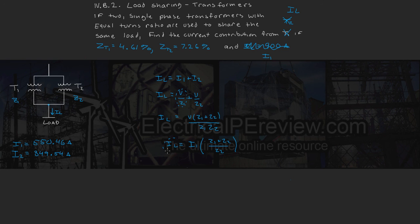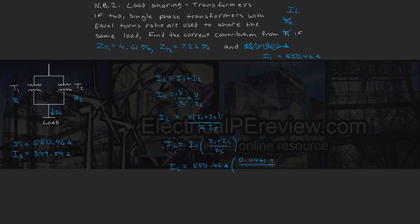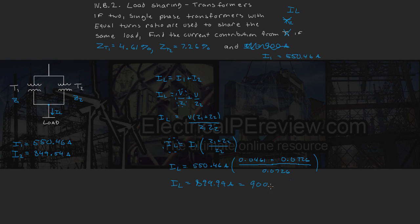Since we're searching for the load current, we plug in our terms. We know I1 equals 550.46 amps. Multiplying that by the sum of our impedances — 0.0461 plus 0.0726 — over Z2 gives us IL equals 899.99 amps, which equals our load current of 900 amps.